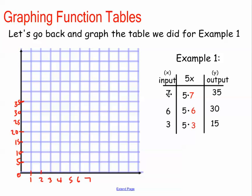So this is 0, 0. My input is 7, 35 — over 7, up to 35. Then 6, 30 — over 6, up to 30. And 3, 15 — over 3, up to 15.